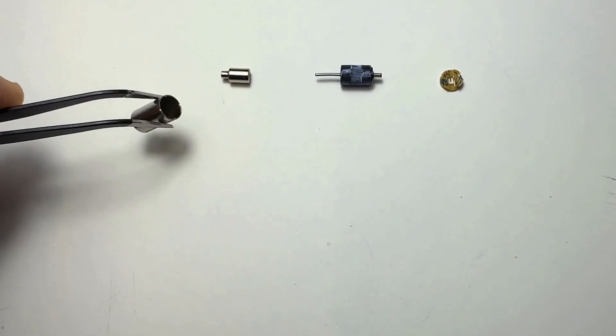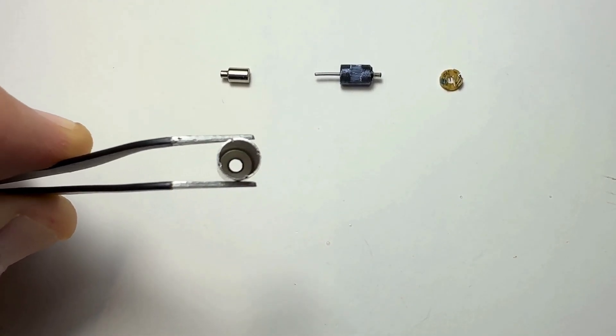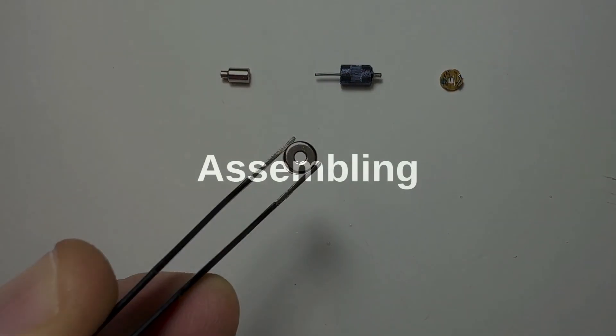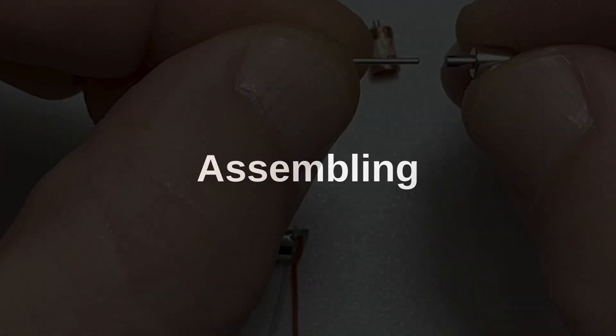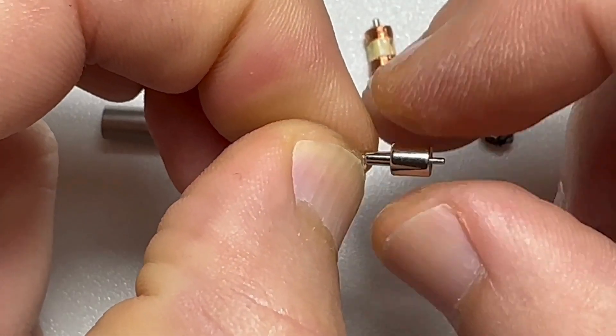The last component is the motor housing. It encloses and protects the internal components of the coreless motor. Now, here is the step-by-step assembly process. Begin by affixing the rotor to the permanent magnet, ensuring a secure connection.